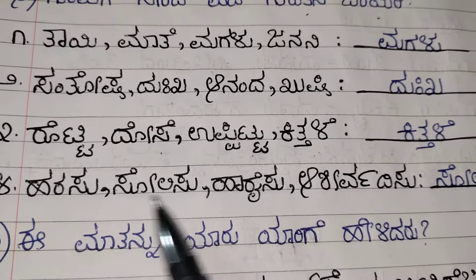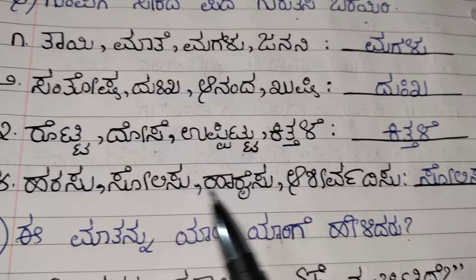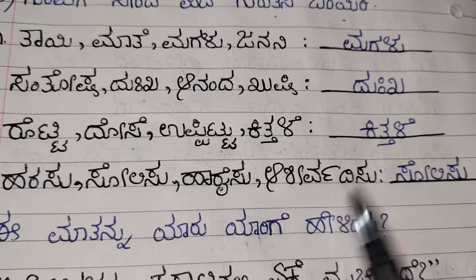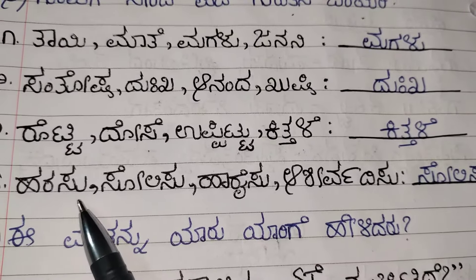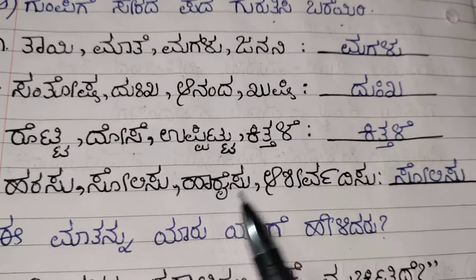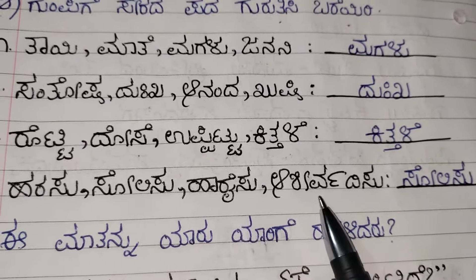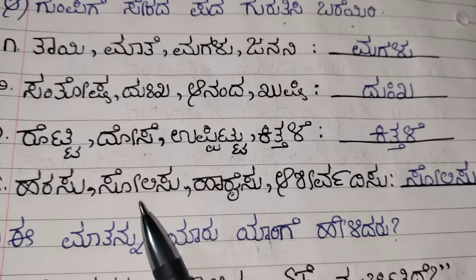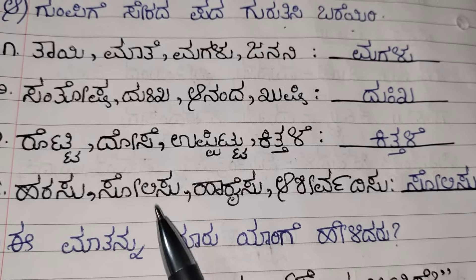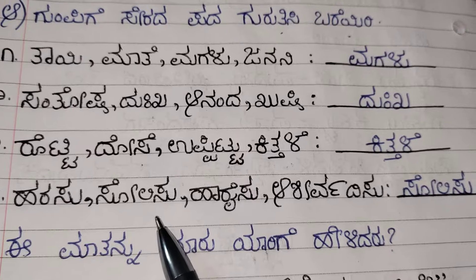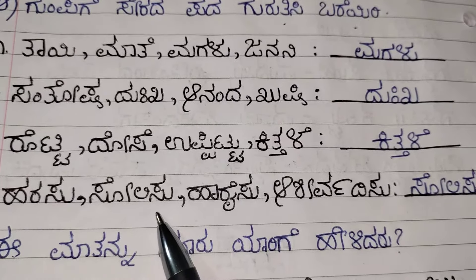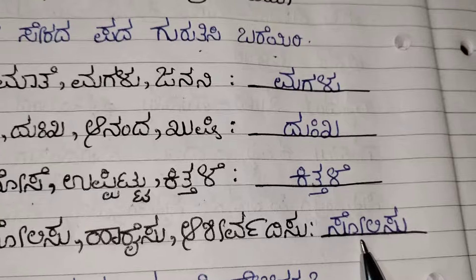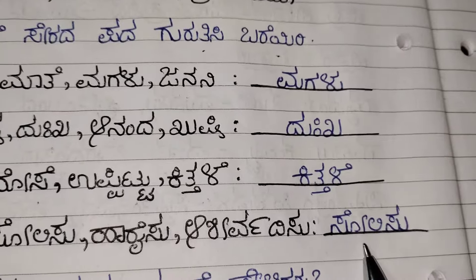Next one: Harasu, Solisu, Harisu, Ashirvadisu. Harasu, Harisu, Ashirvadisu means blessing. Solisu means defeat. So you need to choose the option Solisu here. Solisu is the odd one out.